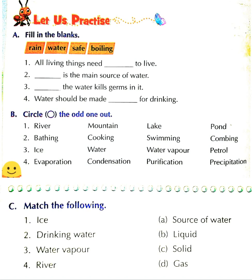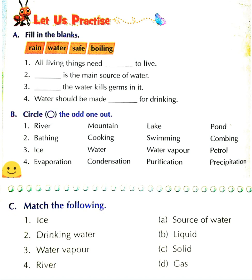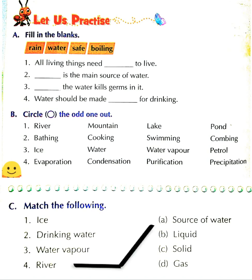Then C is match the following. First, ice is the solid form of water — match it with C. Second, drinking water is the liquid form of water — match it with B. Third, water vapor is the gaseous form — match it with D. And river is the source of water — match it with A.